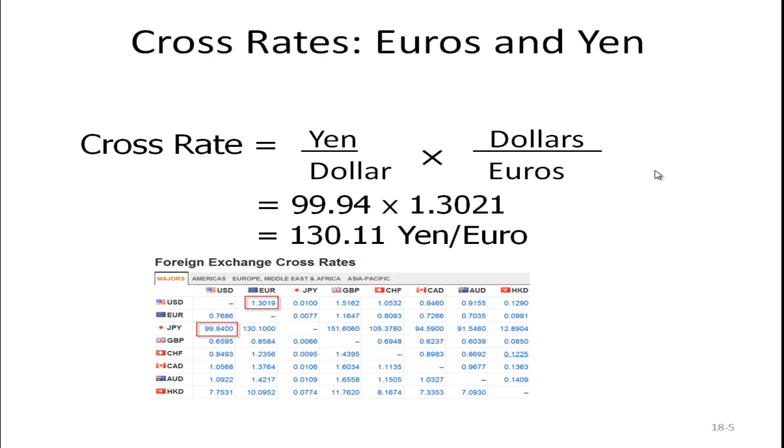Now, with transactions costs, a small difference here, you know, .01 may not be enough for traders to make some money, because after they have to pay their fees for doing the exchange, they may not be able to make any money. So you may have slight differences from what the theoretical value is. But technically, if there were no transactions costs, they should be exactly what you work out here from this cross rate.